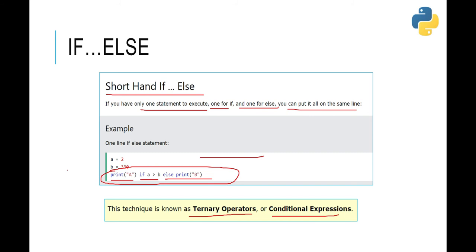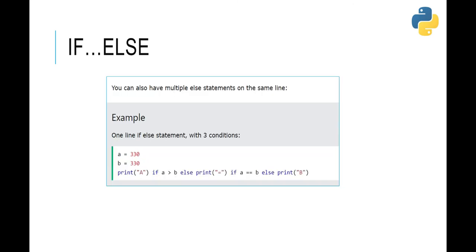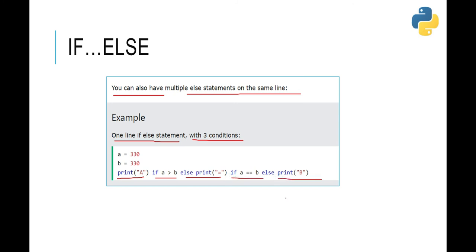You can also have multiple else statements on the same line with three conditions. For example: 'print a if a is greater than b else print this if a is equal to b else print b'. As you can see, we have multiple else statements chained on the same line. This keeps in mind that this works only when you have one statement for if and one for each else.